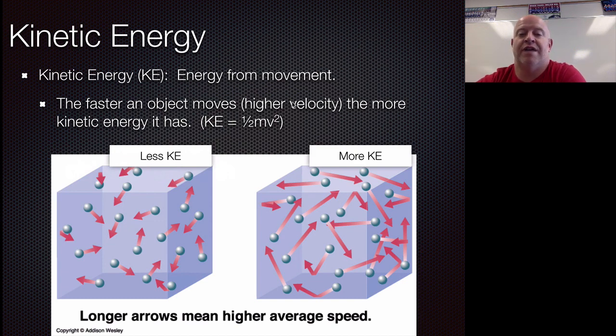Now, the faster an object moves, we call it the higher velocity or higher speed, the more kinetic energy it has. There is an equation for this. Its kinetic energy equals one half your mass times your velocity squared. So it's not a direct proportionality because we do have a squared function in here.